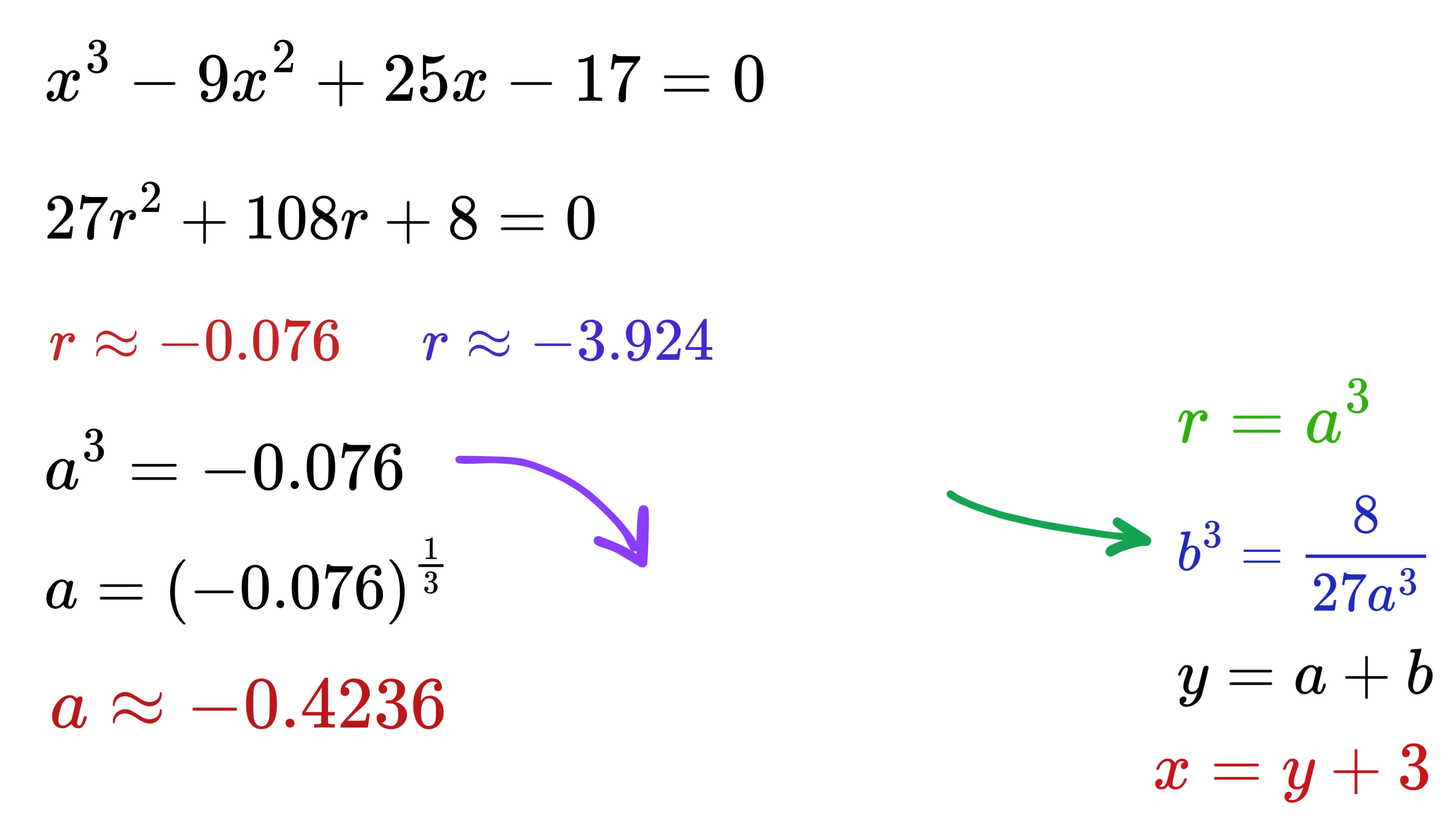Also, b³ will be 8/(27a³), or this. But hey, this is the same value that we obtained for the other root of r, and thus we always get the roots of r as a³ and b³. So b will be this raised to 1/3, which is roughly this.